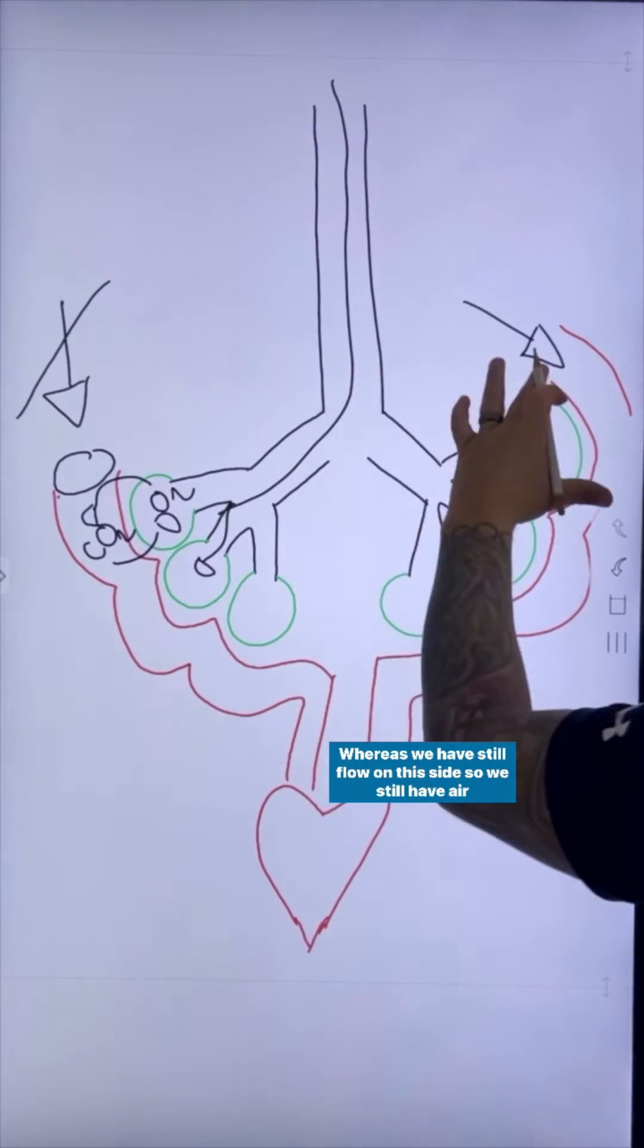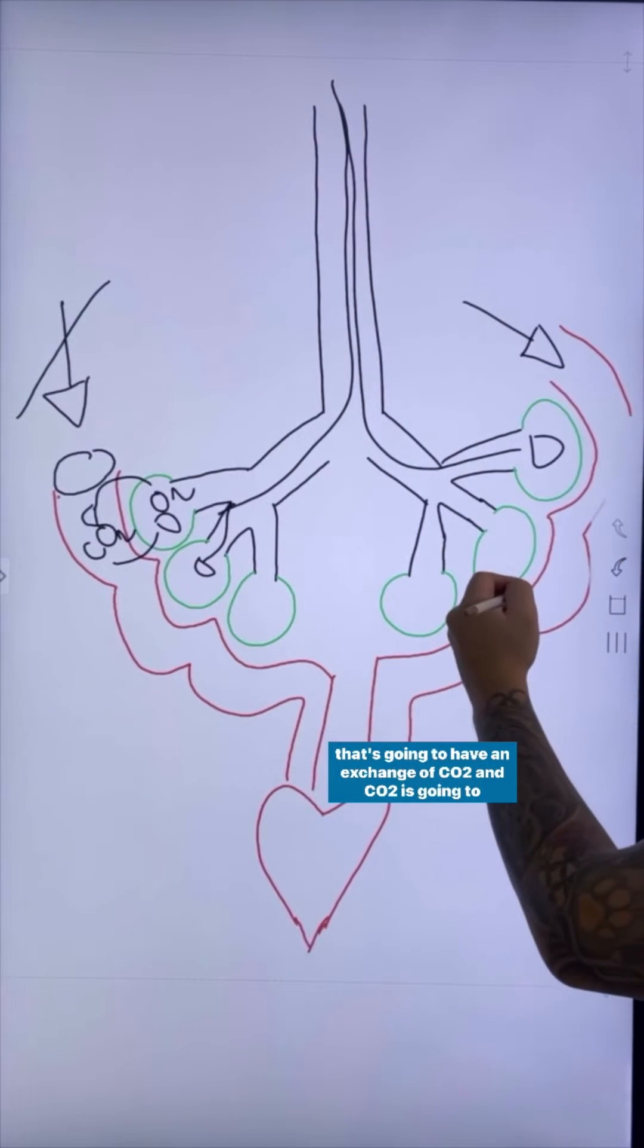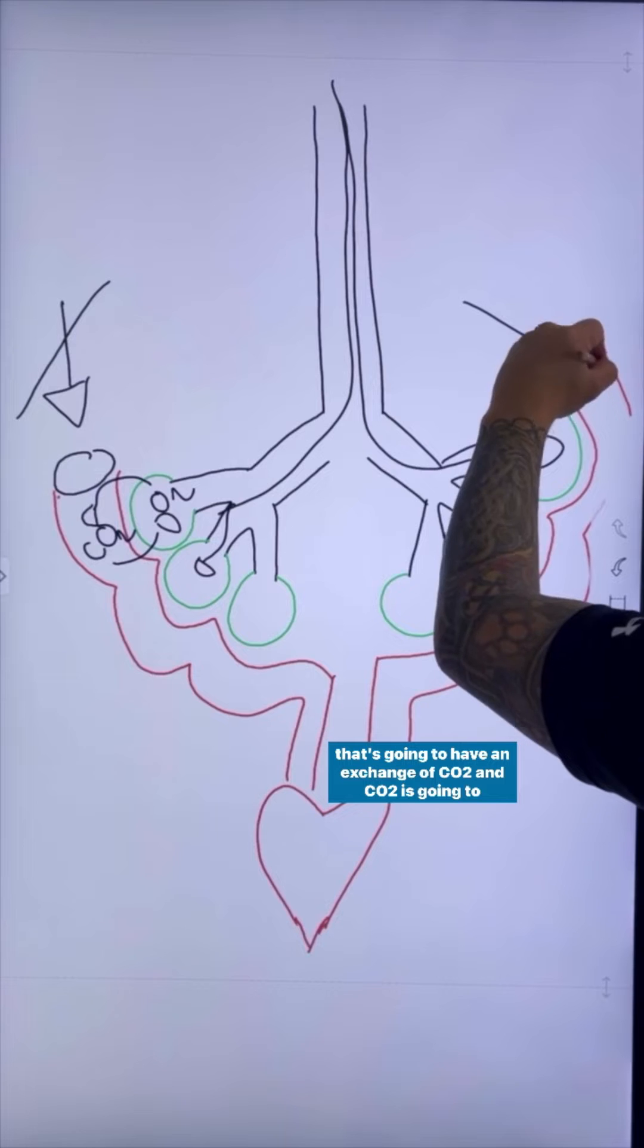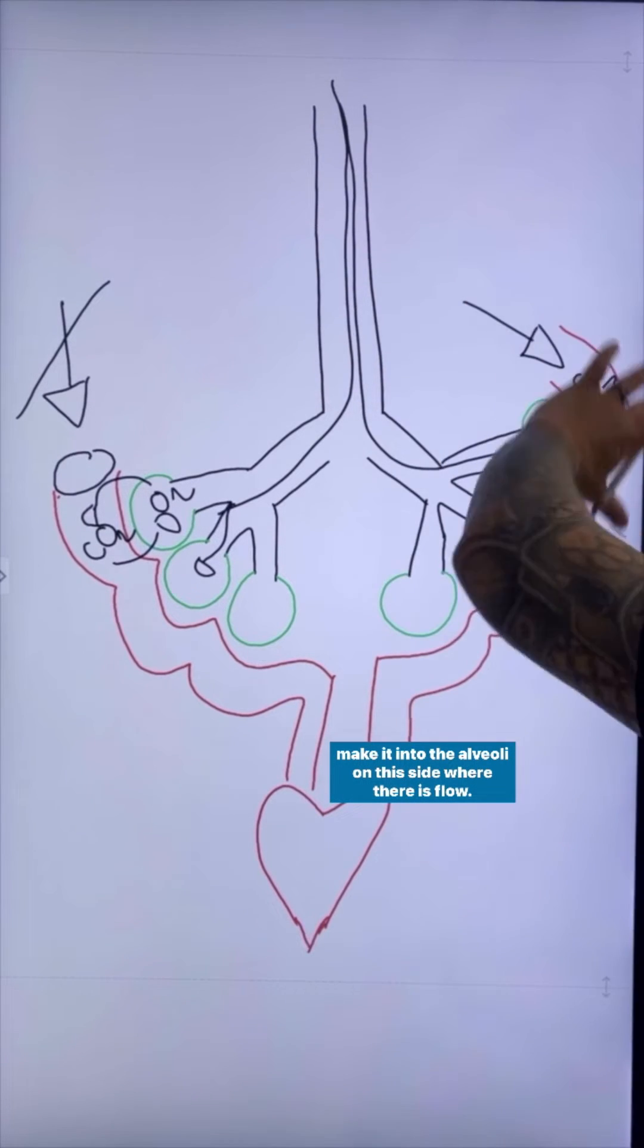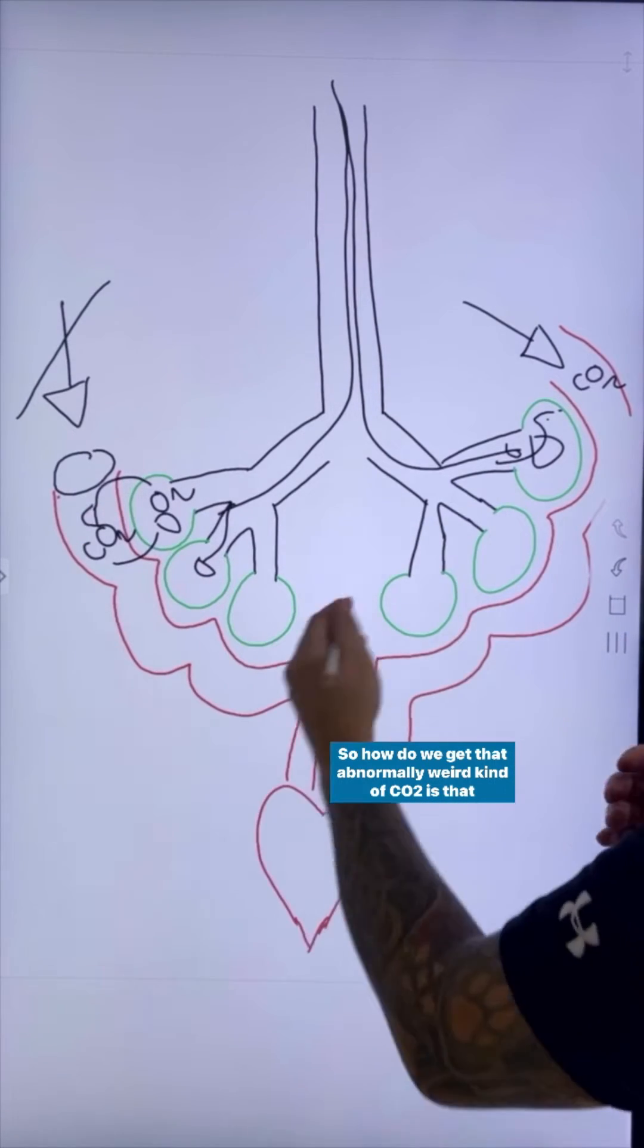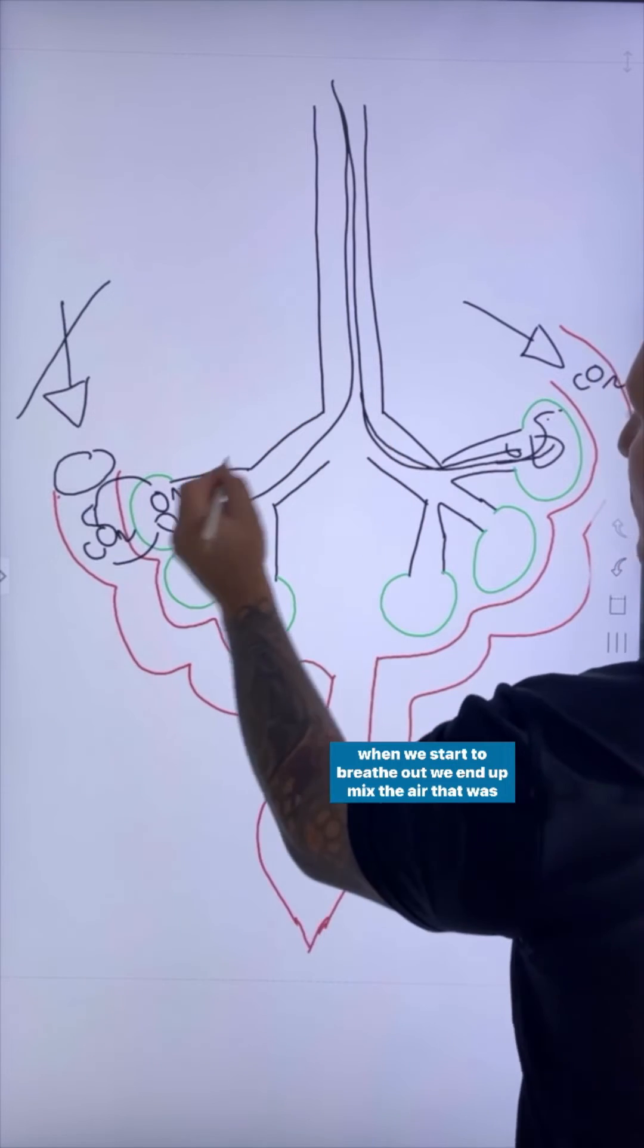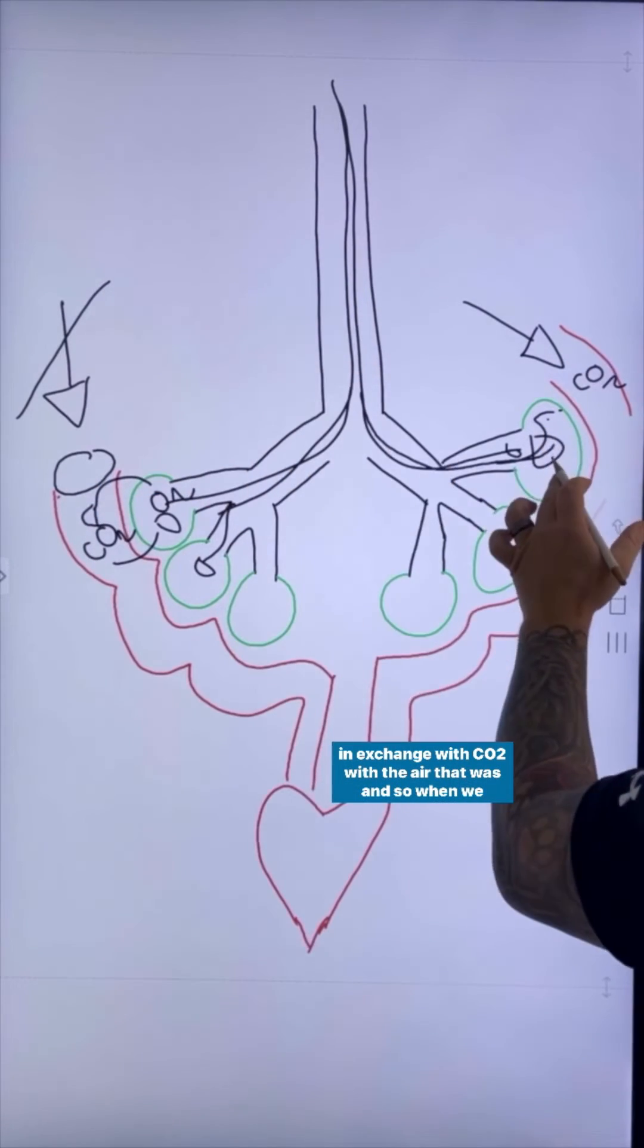Whereas where you have still flow on this side, we still have air that's coming into these good alveoli that has good flow that's going to have an exchange of CO2. And CO2 is going to make it into the alveoli on this side where there is flow. So how do we get that abnormally weird kind of CO2? When we start to breathe out, we end up mixing the air that was in exchange with CO2 with the air that wasn't.